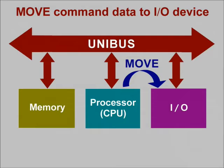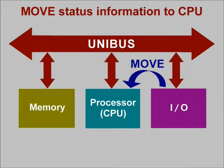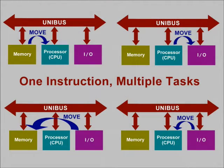Let's look at another way of using this same move instruction. Perhaps our I/O device has completed its job and has significant information that needs to be stored for future use. Again, we can use the same move instruction — this time it transfers information from the I/O device to the memory for storage. Sometimes we might like to know just what our I/O device is doing. We can use this same move instruction to transfer status information from the I/O device to the processor. Note that the instruction itself never changes, but the reason for using the instruction and the kind of data it handles differ, depending on what task you're trying to perform.